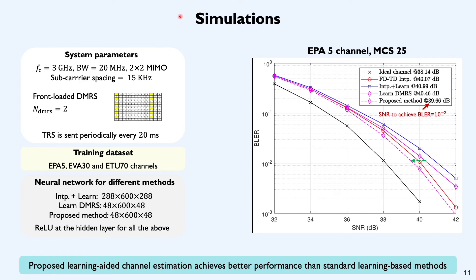Now let's take a look at how our algorithms perform from a simulations perspective. We consider a system in FR1, so frequency range 1, where the carrier frequency is 3 GHz. We use a bandwidth of 20 MHz that corresponds to about 100 RBs and it's a 2x2 MIMO system with 15 kHz sub-carrier spacing. The DMRS configuration is exactly the same as what I have been showing throughout this presentation. It's a front-loaded DMRS configuration with 2 DMRS OFDM symbols. TRS is sent periodically every 20 milliseconds and using this TRS, the Doppler spread and the power delay profile are estimated. For training, we use a dataset containing EPA5, EVA30 and ETU70 channels. Here, phi in EPA phi denotes the Doppler spread for extended pedestrian A type of channels.